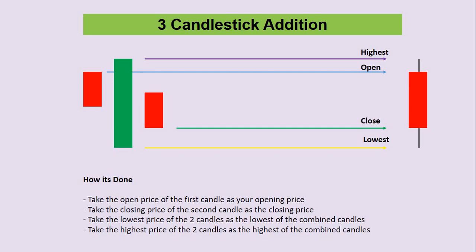Like the first one, we are going to look at the first candle and the opening price of that candle is going to be our opening price as well. Then we project it to the new candle. We are going to look at the last candle — in this case it was the second red candle — and the closing price of that becomes our closing price of the new candle. So just like in the previous video, the first candle's open and the last candle's close are the opening and closing prices we are going to take.